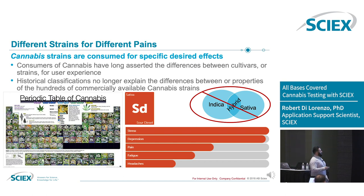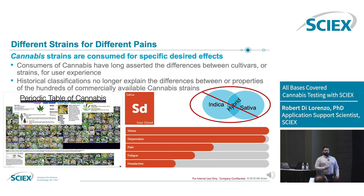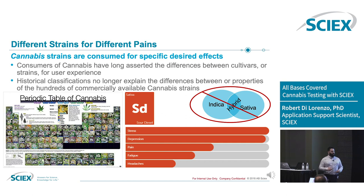Consumers and cannabis aficionados have long asserted that the differences between strains are not just from the cannabinoid profile, but from how this product smells, how it tastes, and the overall experience. Drinking wine is not just about how drunk you can get — it's about experiencing that bottle of wine. Cannabis is the exact same way, and the vast majority of that comes from the terpene profile.